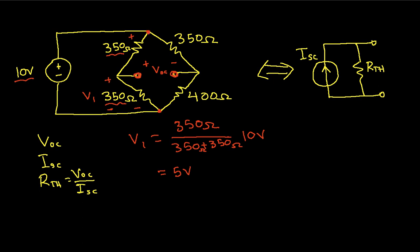The same thing goes for this other branch. Between here and here, I have that the 350 ohm resistor and the 400 ohm resistor are in series. So if I define this voltage here as V2, I have then that V2 will be 400 ohms over 350 ohms plus 400 ohms times 10 volts, which when I calculate this one out, I get that this is 5.33 volts.